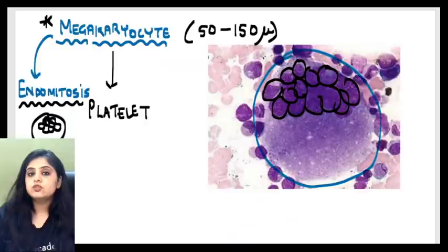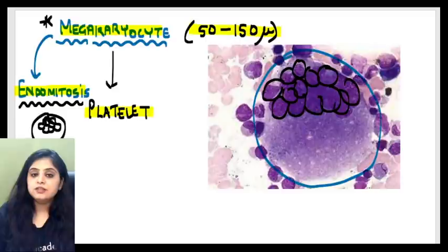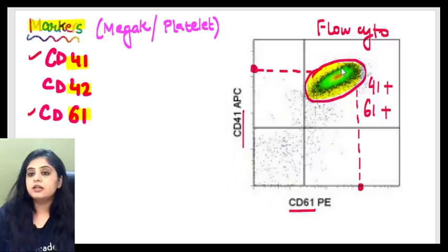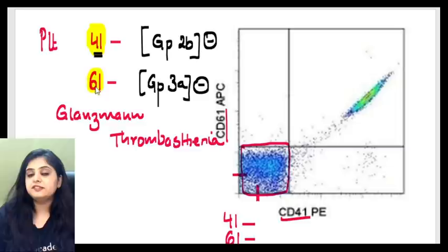Quick revision: the megakaryocyte is a precursor of the platelet, with a size of 50 to 150 microns. It exhibits endomitosis and gives rise to platelets. Its topography in bone marrow is perisinusoidal. Markers are CD41, CD42, and CD61 — normal megakaryocytes and platelets are positive for these. If platelets lack CD41 and CD61 (GP2B and GP3A), the disease is Glanzmann thrombasthenia.